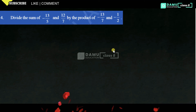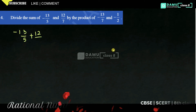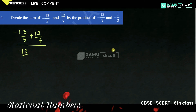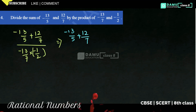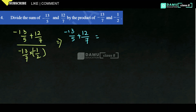In this question we are going to discuss: divide the sum of minus 13 by 5 plus 12 by 7 by the product of minus 13 by 7 into minus 1 by 2. First, let's calculate minus 13 by 5 plus 12 by 7. Let's take LCM of 5 and 7, which is 35.